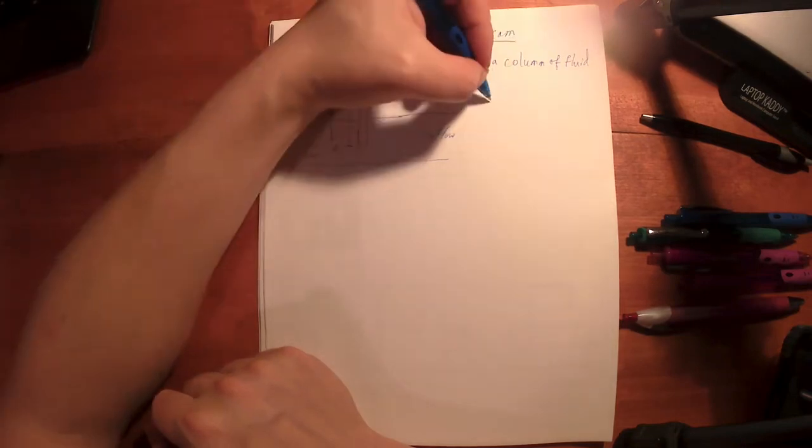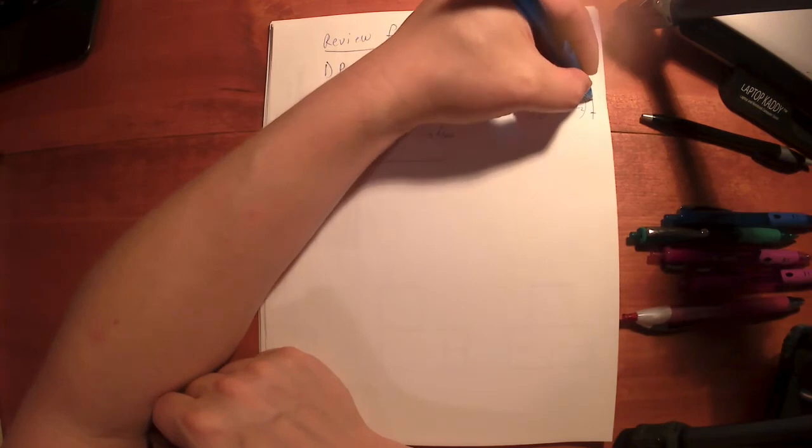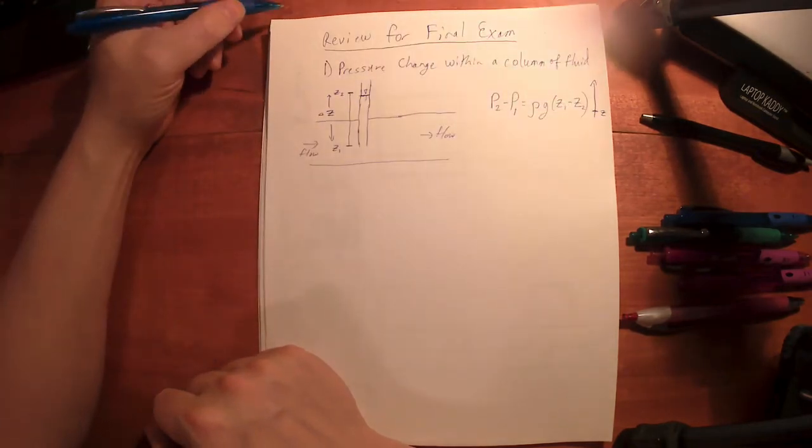So the pressure change, the way our text likes to write that is that P2 minus P1 is equal to the density of the flowing fluid times gravity. And your text likes to write it Z1 minus Z2. That's where we're referring to Z as elevation. That means Z is going to increase in the up direction.